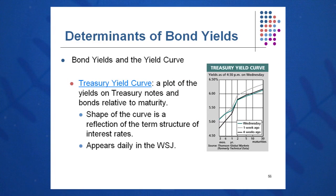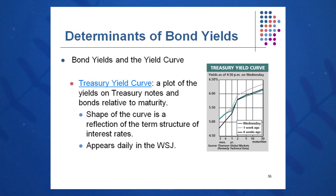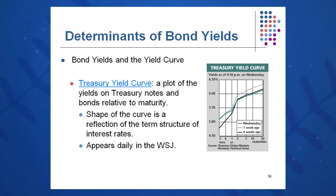This is simulated by a simulation of the treasury yield curve, which is a plot of yields on treasury notes and bonds relative to maturity. It is typically upward sloping, though I've seen it a couple of times slope downward. It appears in the Wall Street Journal on a daily basis, and it reflects the term structure of interest rates. Shorter-term rates are lower than longer-term rates because we want payment for those three components reflected in the term structure.